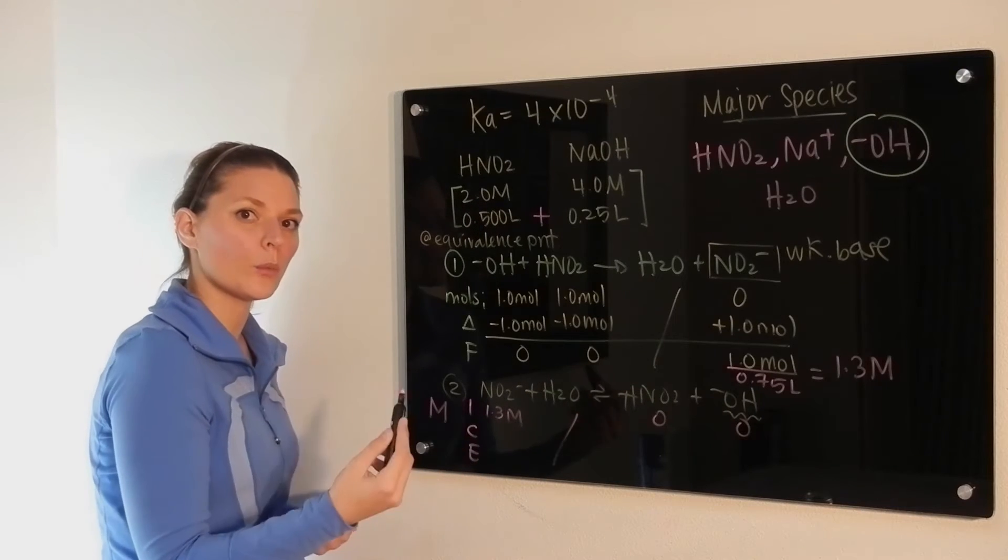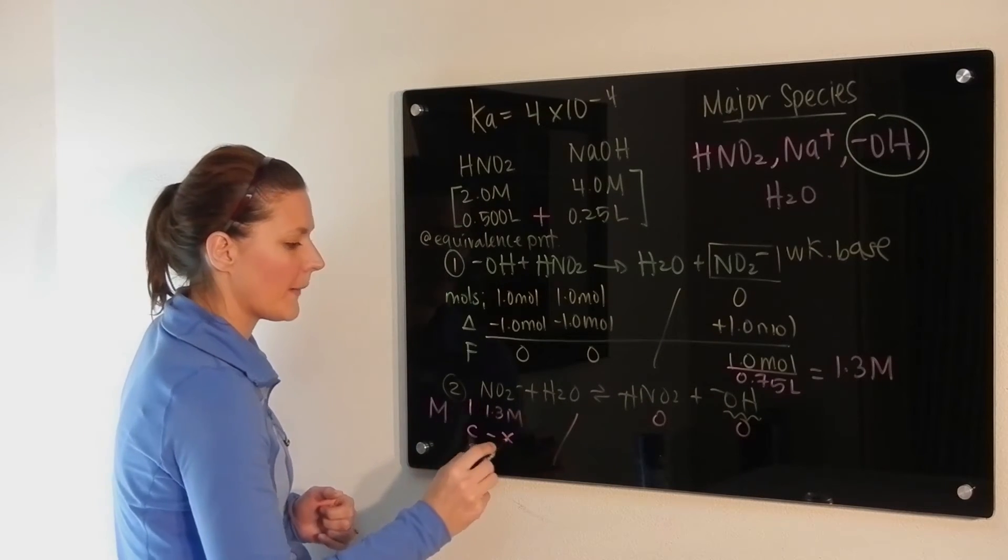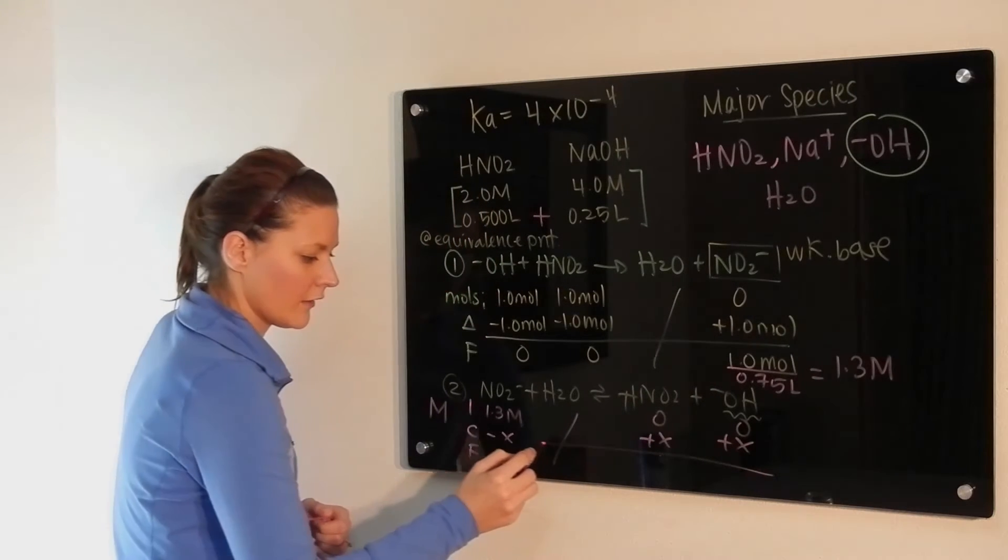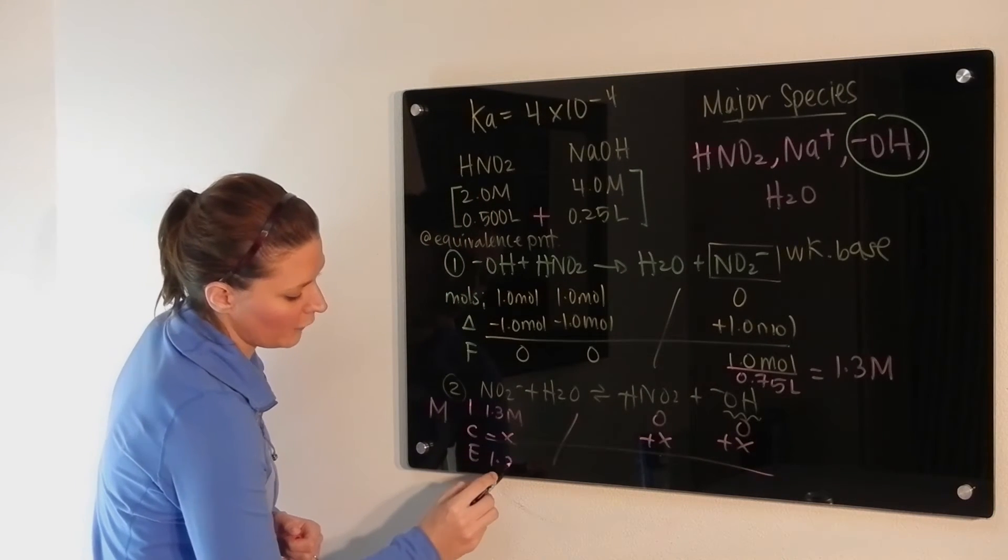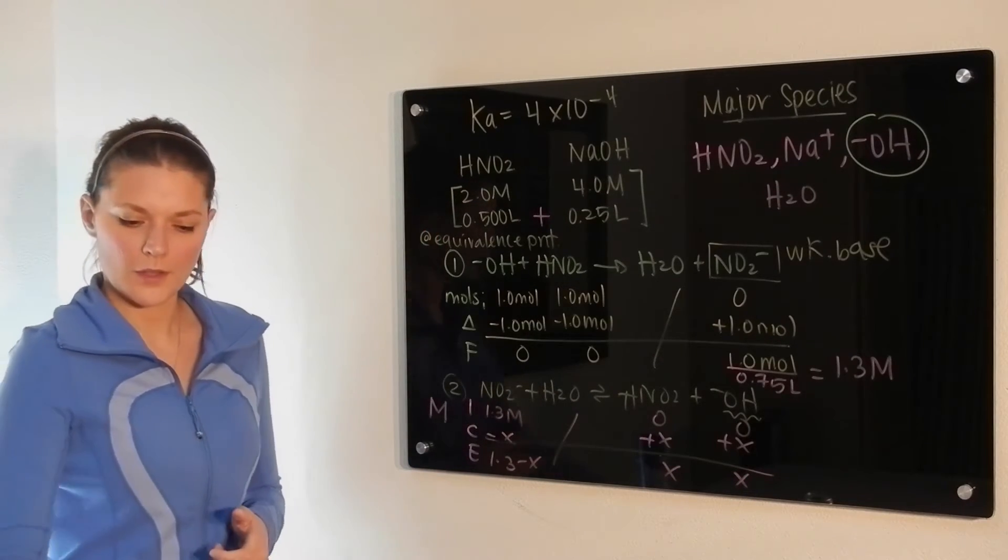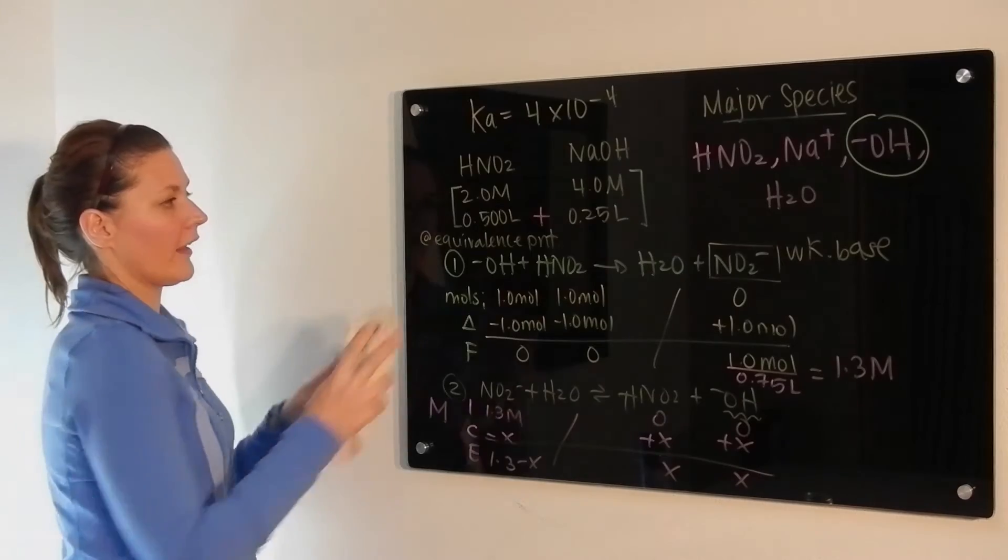Then ice chart, as we normally have done that calculation, minus x, plus x, plus x. So at equilibrium, we have 1.3 minus x, x, and x. Okay, so that would be the ice chart portion of the calculation.